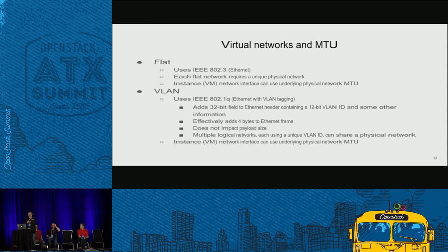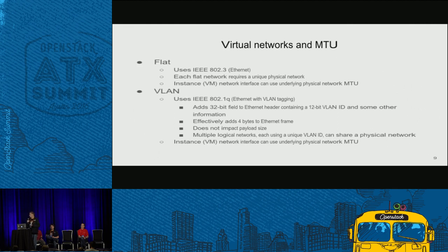Inside ML2, there are different ways tenant networks can be set up for traffic to be carried on the operator's physical network underneath, and this impacts the MTU that instances need to use. The easiest is the flat type — just Ethernet passed straight through, so the instance MTU can exactly match the underlying physical network MTU. VLAN is similar because the VLAN tag added to the Ethernet frame doesn't impact maximum payload size, so instances can also use the exact same MTU configured on the operator's network.